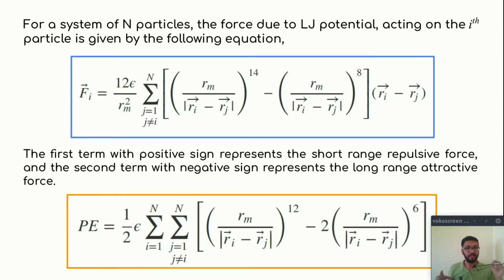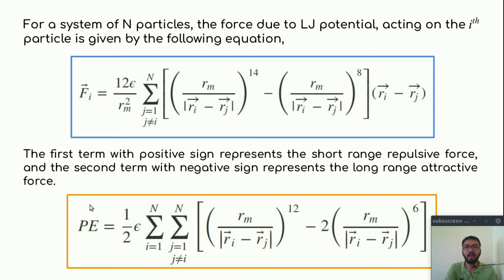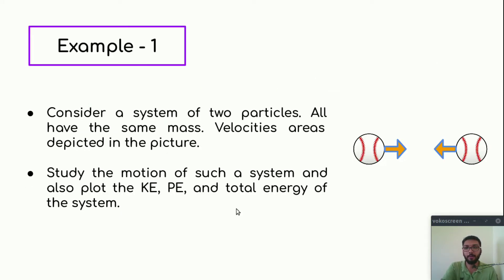If your particle is far away, the LJ potential will give rise to an attractive force. And if your particle is too close, it will give rise to a repulsive force. That's how this LJ potential acts. This is the formula for potential energy. Let's discuss some examples and dig deeper into this topic.